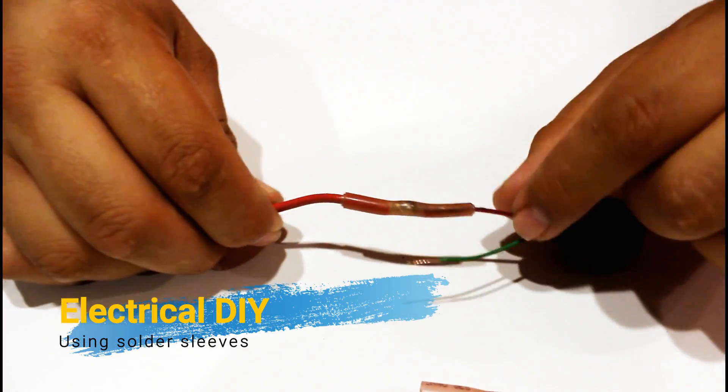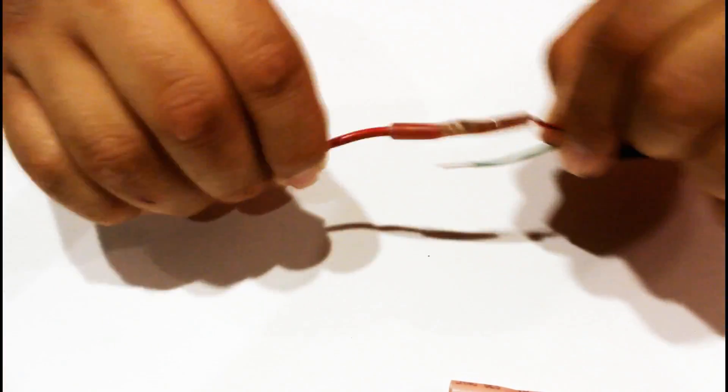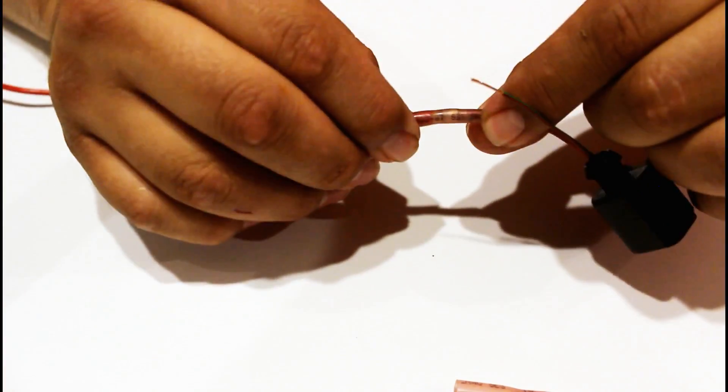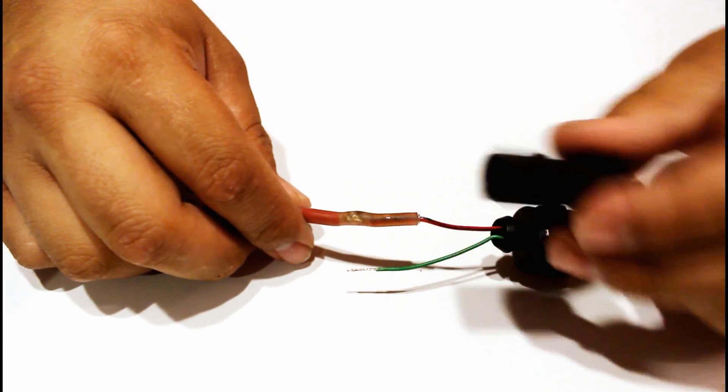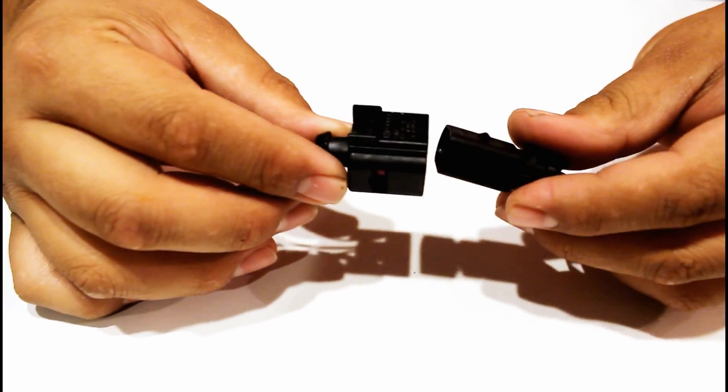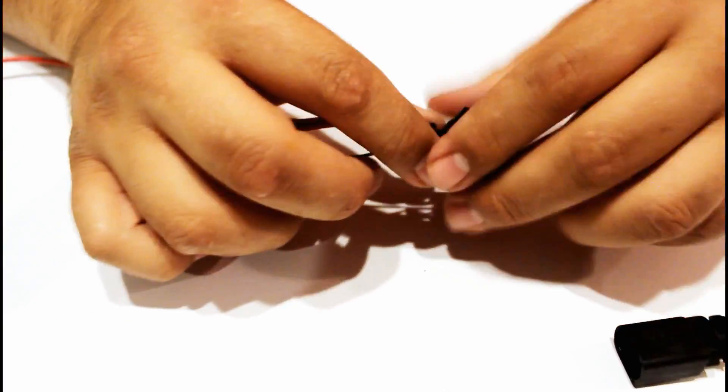Today we're going to show you how to make these electrical connections that are super tight, waterproof, and soldered inside. We have an outside temperature sensor that we're fixing on the car and the wiring was all damaged from an accident. So we're going to be doing that replacement here.